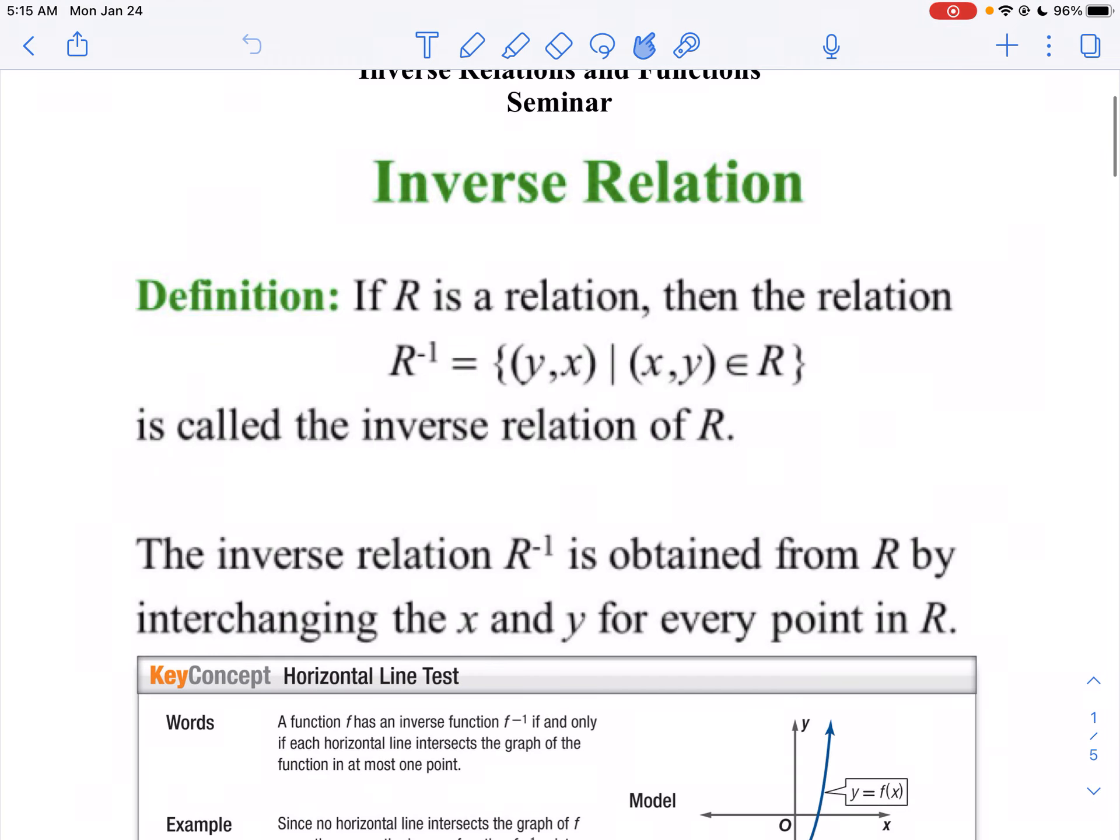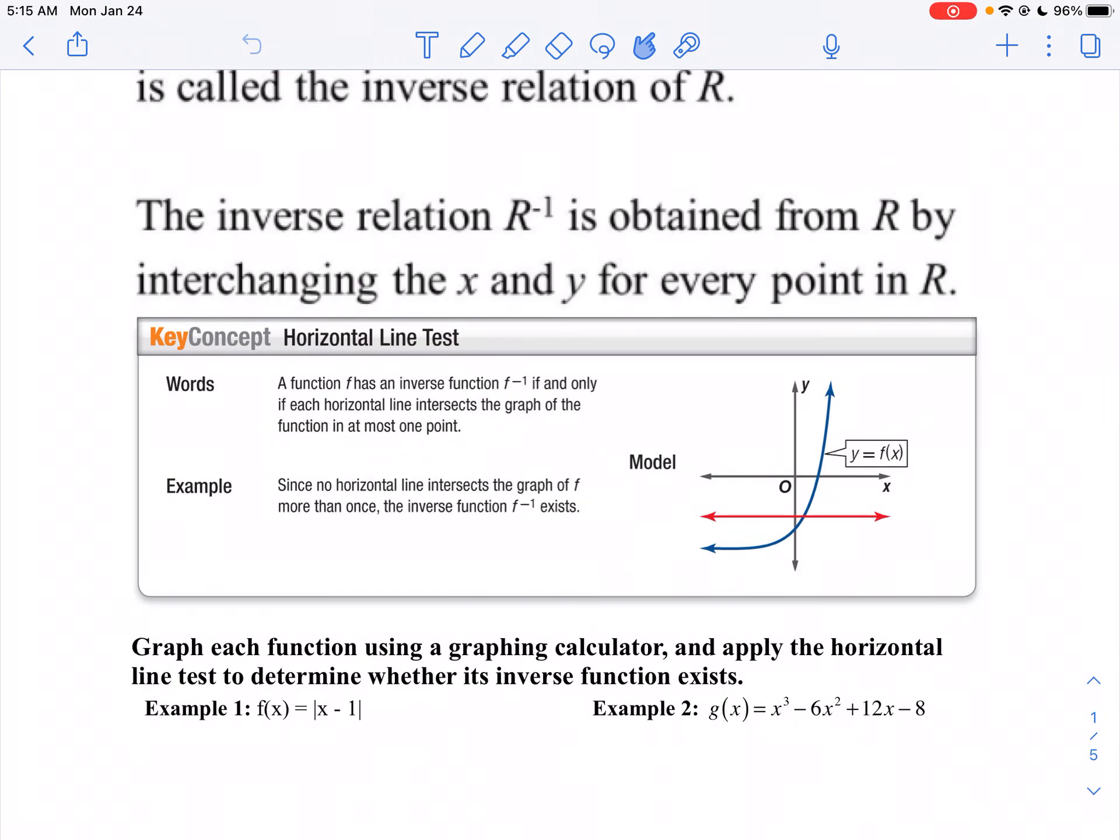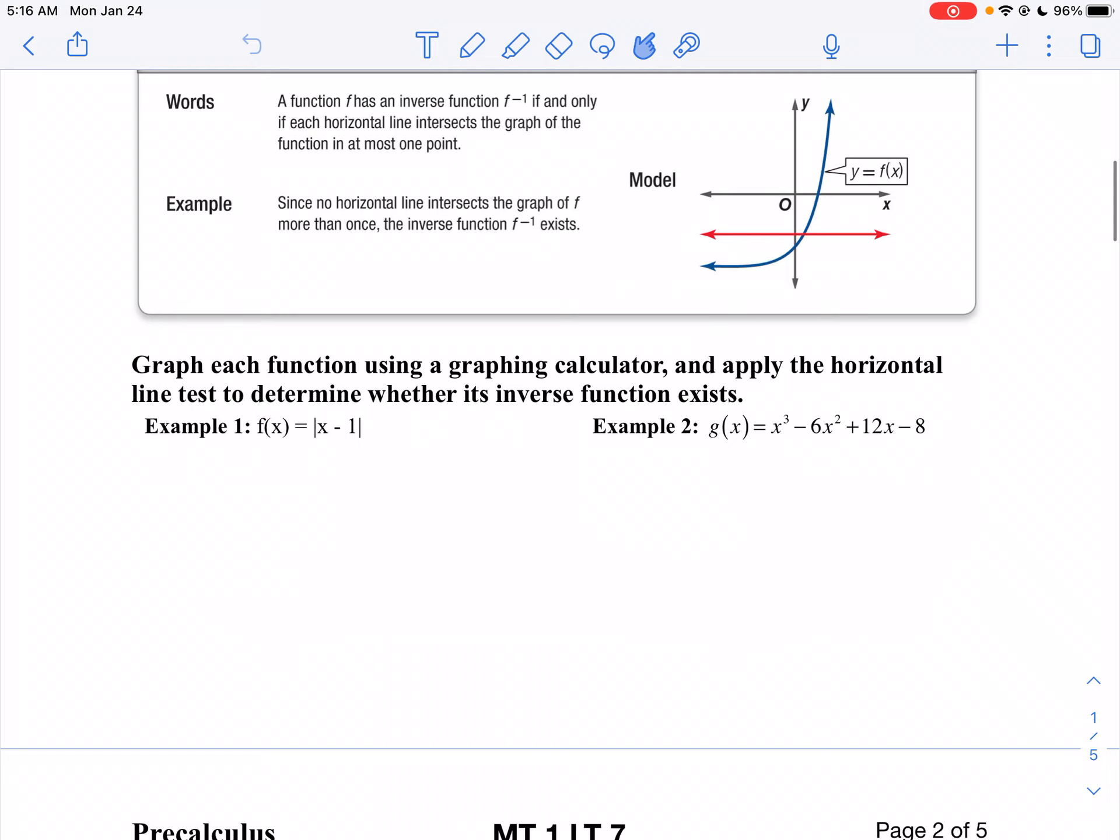To determine if a function has an inverse, or if a relation has an inverse, we're going to use what's called the horizontal line test. Remember, to see if something's a function, we have the vertical line test. We graph it and see if the vertical line crosses it. Well, if it's a horizontal line test, we're going to graph that function and see if the horizontal line only touches it once. It has to be, in other words, this has to be a one-to-one function in order to have an inverse.